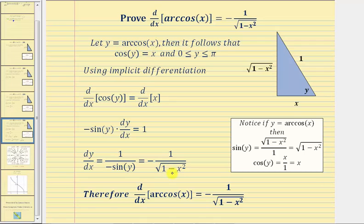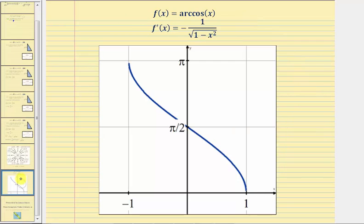And the function is also going to be decreasing where the derivative is defined. Let's verify this graphically. Here's the graph of f of x equals arc cosine x, and notice how wherever the derivative is defined, the slopes of the tangent lines would be negative and the function is decreasing. I hope you found this helpful.